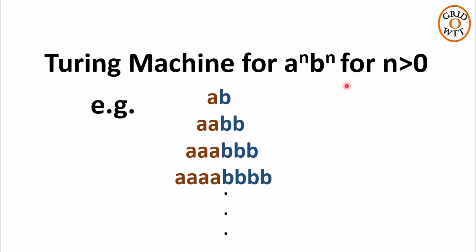That is, the number of a's is equal to the number of b's, and all a's come first followed by all b's. For example, the smallest string of this type is 'ab' when n equals 1. For n equals 2, the string is two a's followed by two b's. For n equals 3, the string is three a's followed by three b's, and so on.